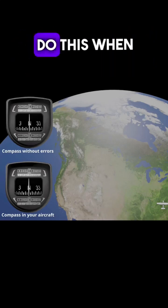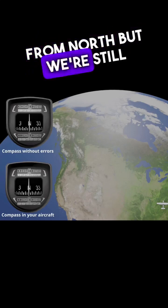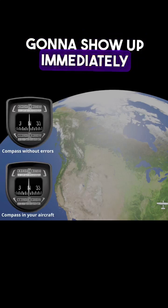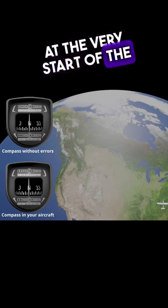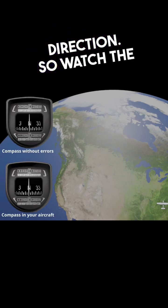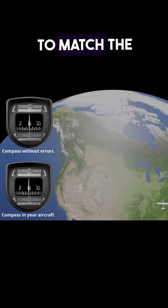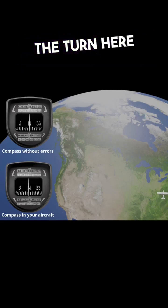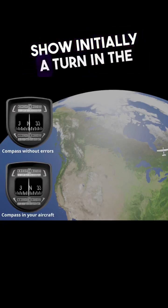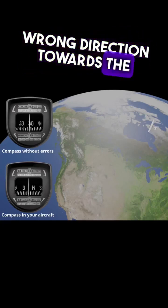Now we're not going to have to do this when we're turning from north, but we're still going to see an error and it's going to show up immediately at the very start of the turn as a turn in the opposite direction. Watch the compass — without errors it's going to match the nose throughout the turn, but the compass with errors is actually going to show initially a turn in the wrong direction, towards the east.